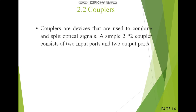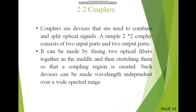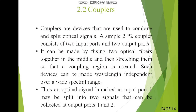Couplers are devices that are used to combine and split optical signals. The basic coupler design is 2×2, meaning 2 input ports and 2 output ports. Couplers are made by fusing 2 optical fibers together in the middle and then stretching them so that a coupling region is created. This coupling region is very important because it defines the coupling ratio. Such devices can be made wavelength independent or wavelength dependent over a wide spectral range. The input signal is launched at an input port and may be split into 2 signals collected at output ports 1 and 2.